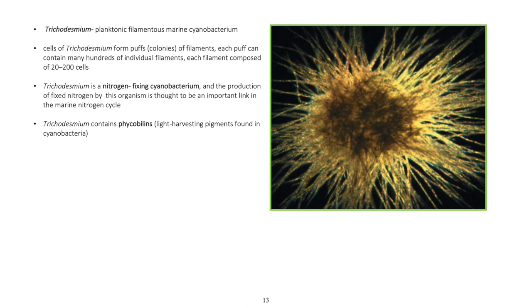Trichodesmium is a planktonic, filamentous marine cyanobacterium. Cells of Trichodesmium form puffs — colonies of filaments — where each puff can contain many hundreds of individual filaments, each filament composed of 20 to 200 cells. Trichodesmium is a nitrogen-fixing cyanobacterium, and the production of fixed nitrogen by this organism is thought to be an important link in the marine nitrogen cycle. Trichodesmium contains phycobilins, the light-harvesting pigments found in cyanobacteria.